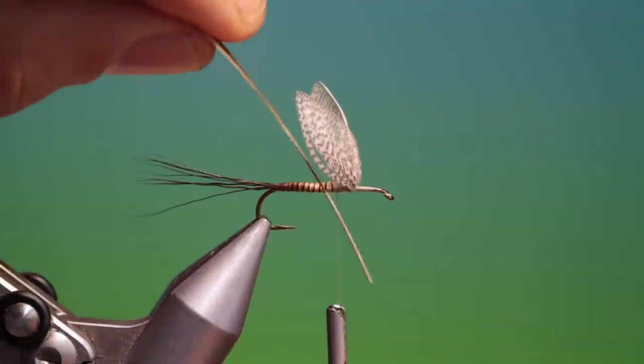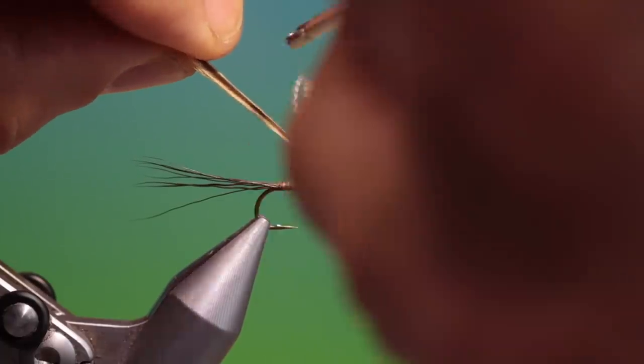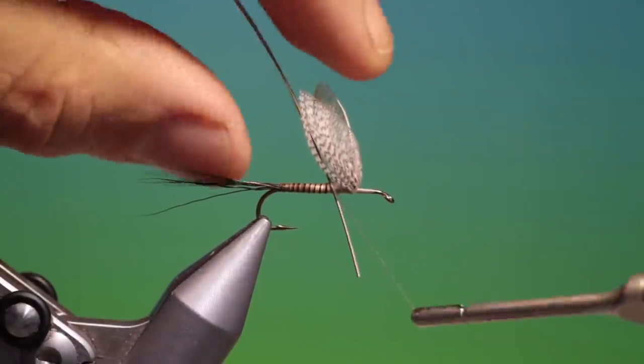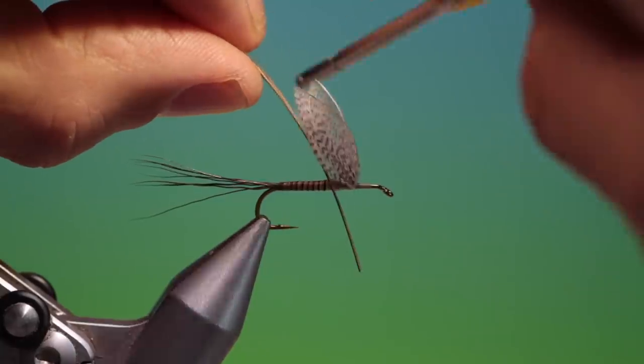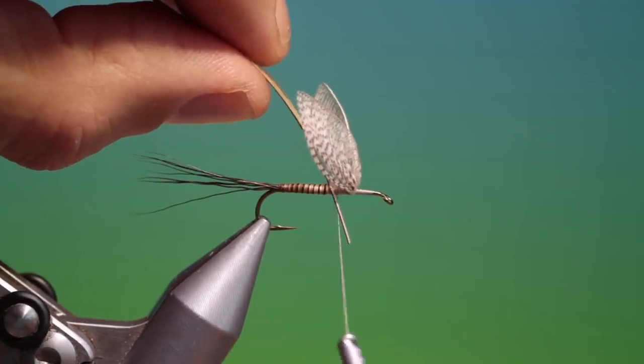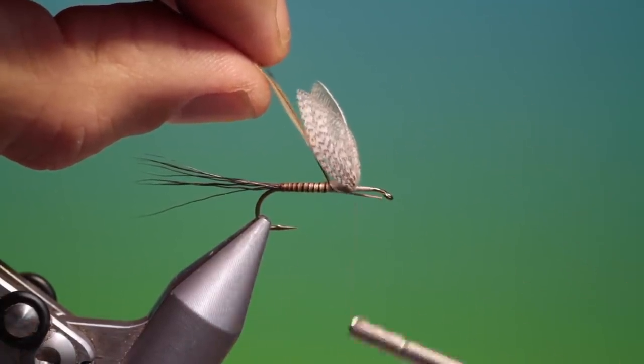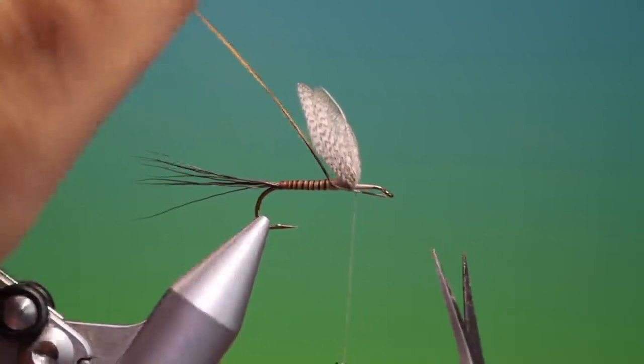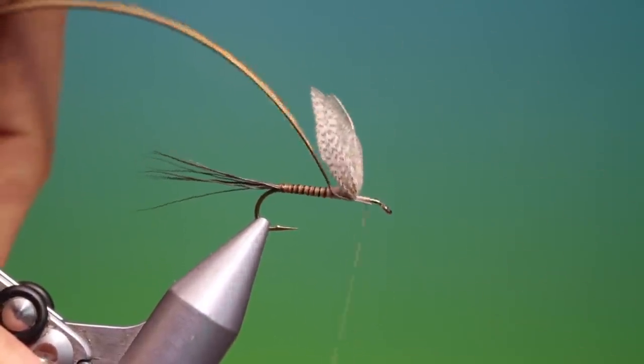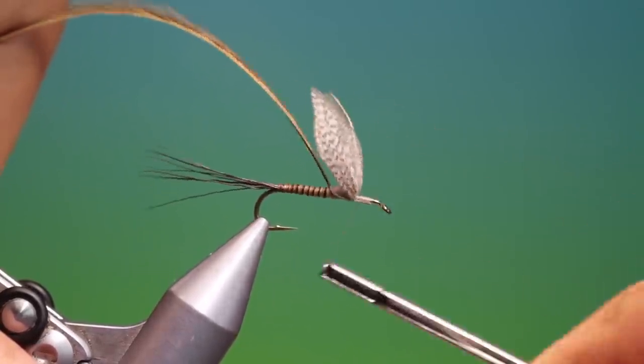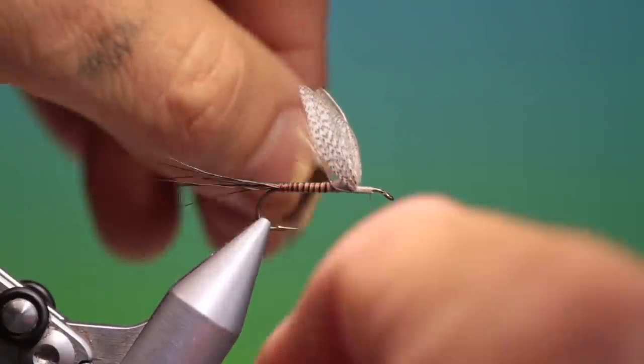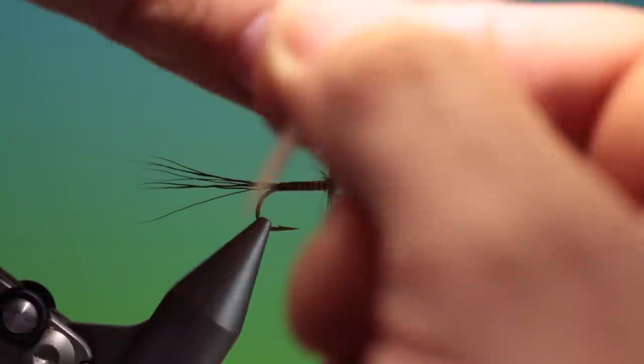I've got a medium brown dun hackle which I'll tie in just behind the wings. And we go up here like so. I'll trim that off there. All I want to do is just bend that up so I can get it under the wings without messing with the wings too much. I can trim that off to size. Tie that down just to secure it. That's good. And then I can wrap the hackle.